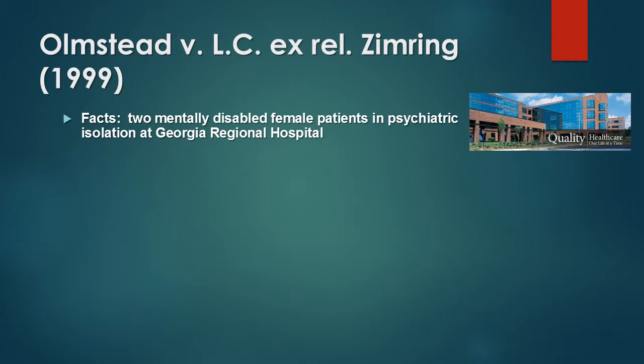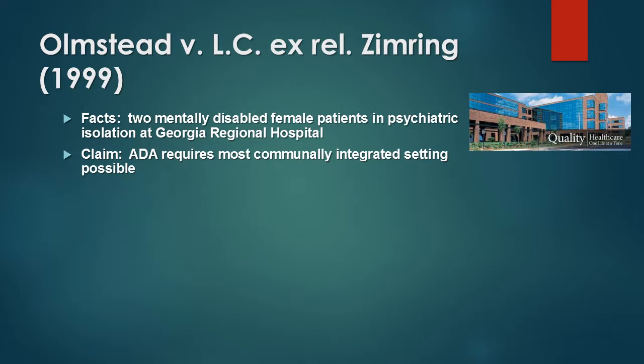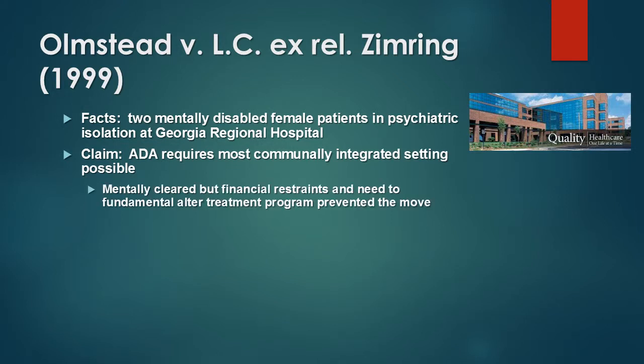The patients argued through their attorneys that the ADA requires the most communally integrated setting possible, and that psychiatric isolation doesn't help them in their treatment. The Georgia Regional Hospital countered that both individuals were mentally cleared to move from isolation into a communally integrated setting, but that financial constraints and the need to fundamentally alter the treatment program prevented these two individuals from moving. The claim was that it would cause too much financial burden and require the hospital to fundamentally alter its treatment programs for the two patients.